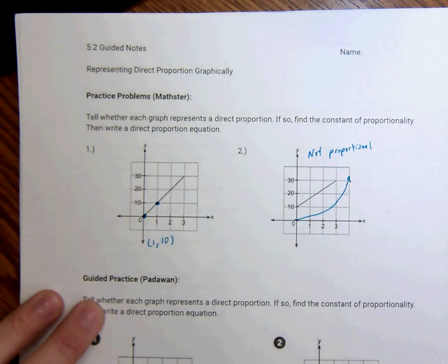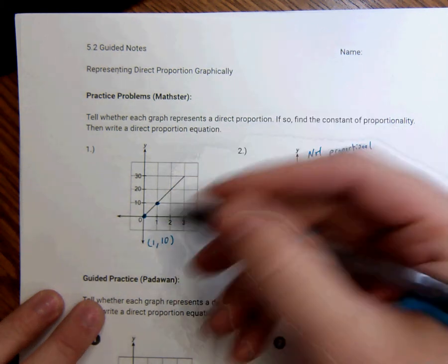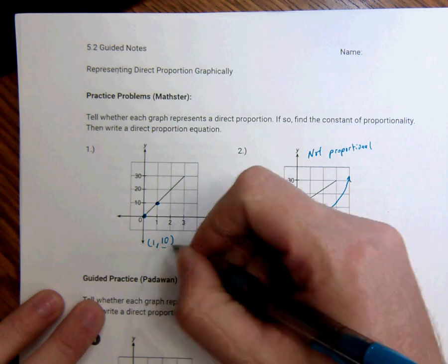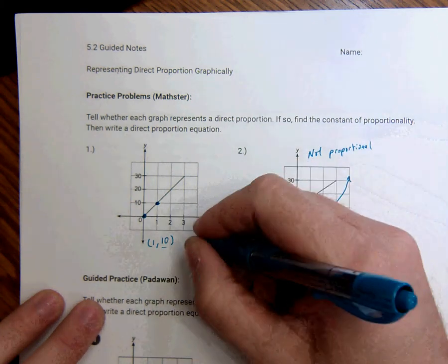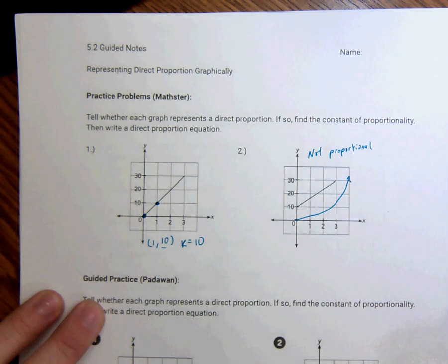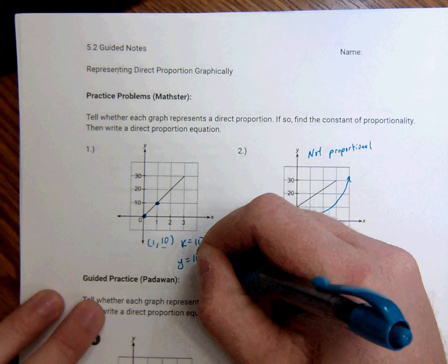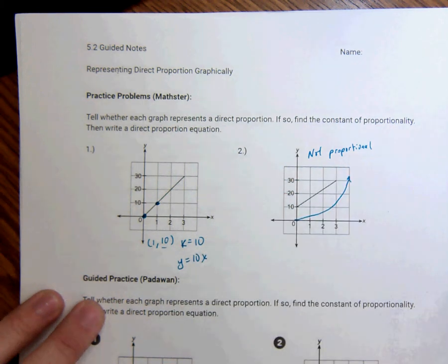So that point means, basically, just like it was when we were doing the tables, we say whatever the second one is, divide by the first one. 10 divided by 1 is 10. So k is equal to 10. And if we were going to write an equation, we would say y is equal to 10x. And it's that simple.